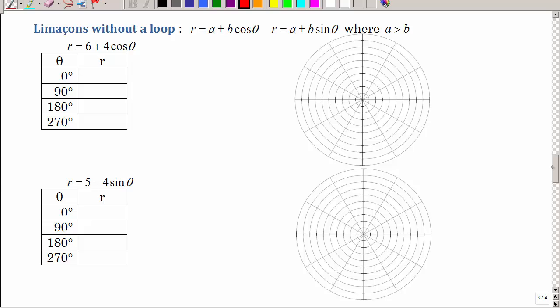Next type are limaçons without a loop. They're not as pretty or fun. But they look pretty much the same as the ones with a loop. It's just that this one is now bigger than that. And that's what makes it not a loop. It's kind of flat on one side. So, again, you could use your calculator, but these are pretty easy values. So 6 plus 4, the cosine of 0 is 1. This is going to be 6 plus 4, the cosine of 90 is 0. 6 plus 4, the cosine of 180 is negative 1.